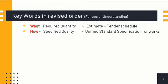The next keyword is 'specified quality.' For quality, we refer to the Unified Standard Specification for Works. It mentions the procedures to be adopted for carrying out each item of work included in the Unified Standard Schedule of Rates. It specifies the quality of raw materials, quality of workmanship, and quality of work to be carried out — answering the basic question: how the work has to be done.